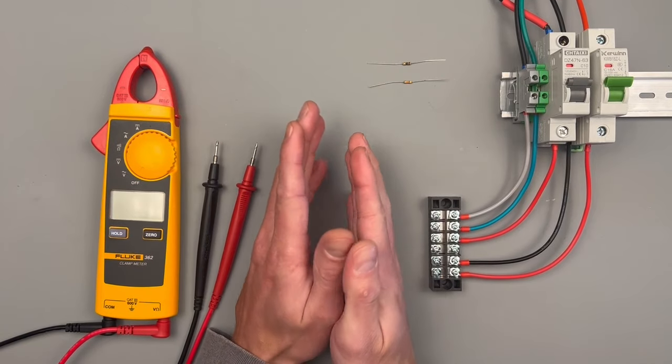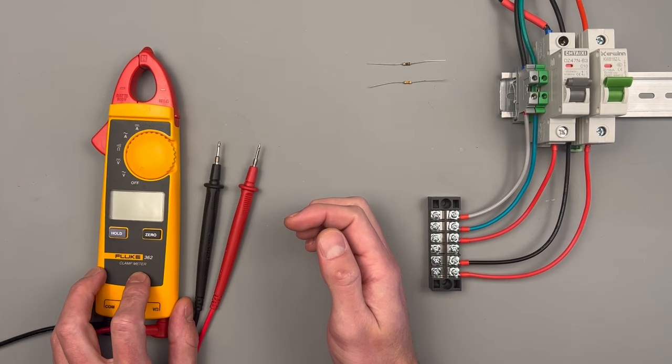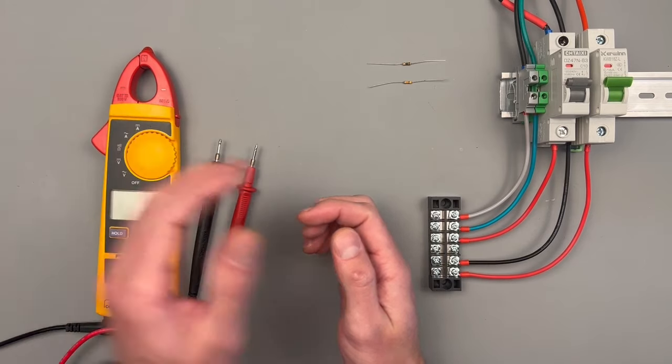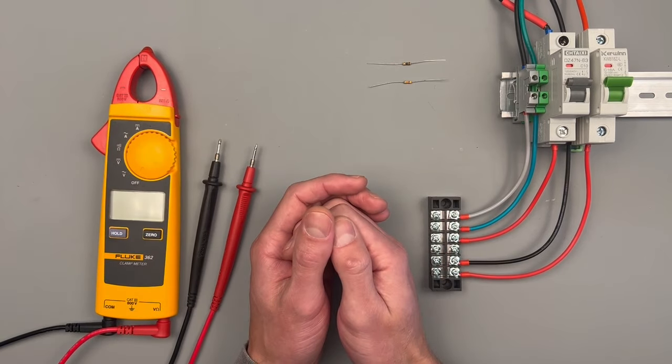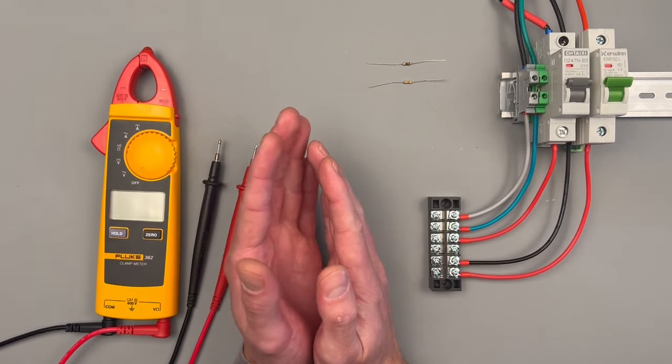Alright, we're going to be going through all the test functions of the Fluke 362 clamp meter. You'll notice it has these smaller clamping jaws good for getting into tighter areas. It's rated for CAT III 600 volts and reading up to 200 amps.